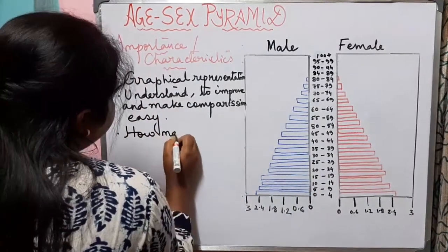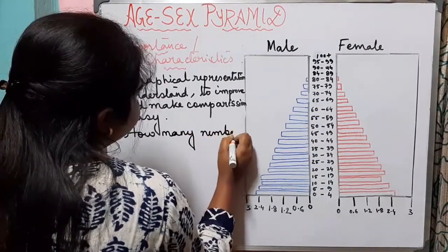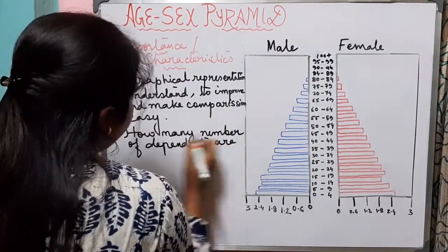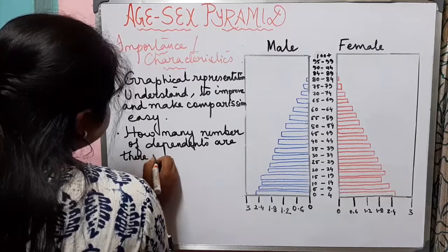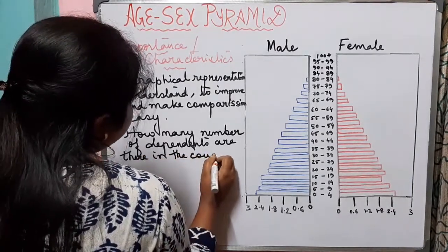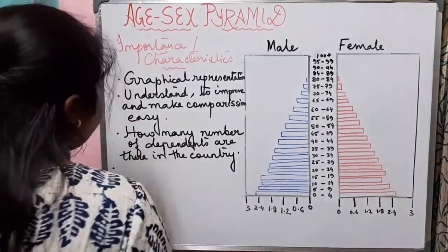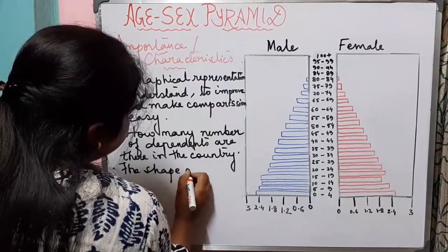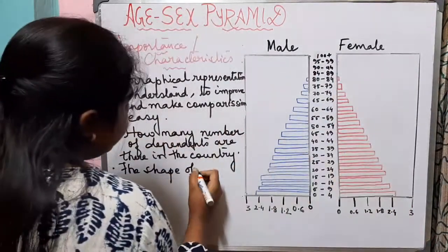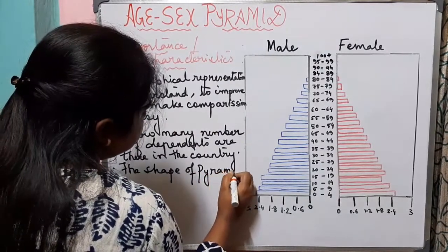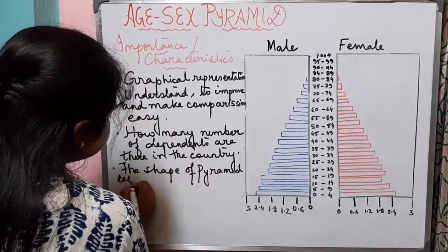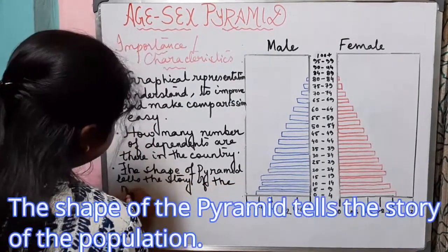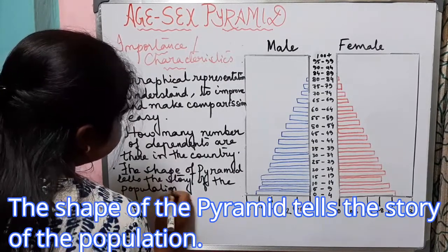The age-sex pyramid also tells us how many dependents are there in a country. The shape of the pyramid tells the story of the population or the people living in that country.